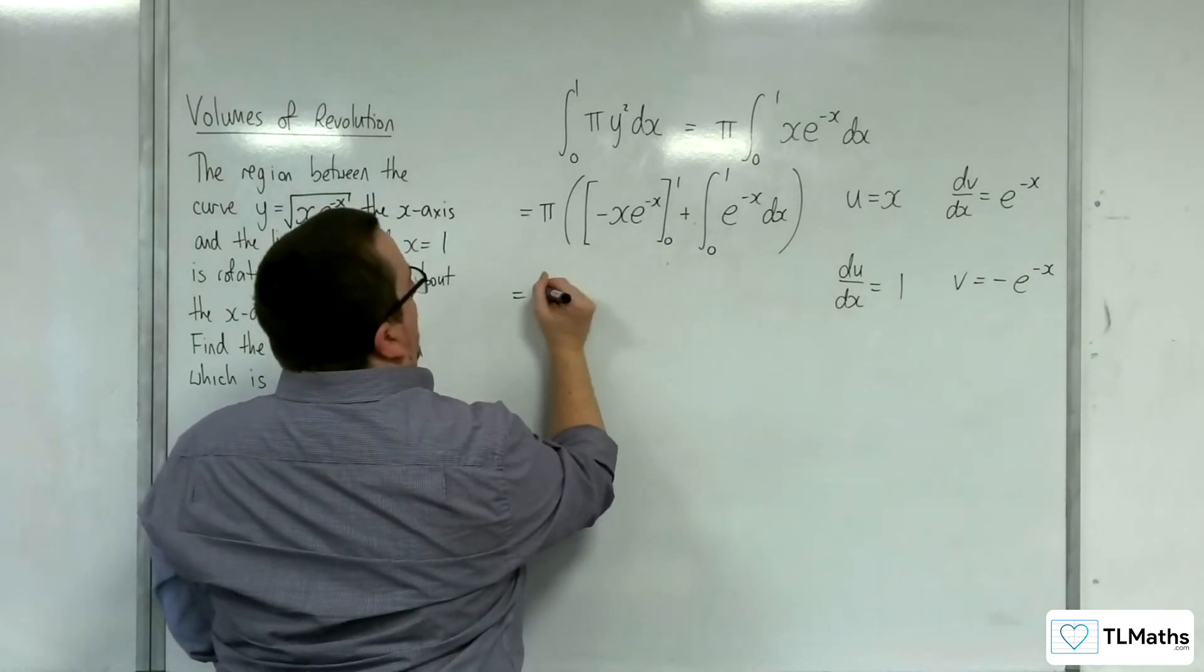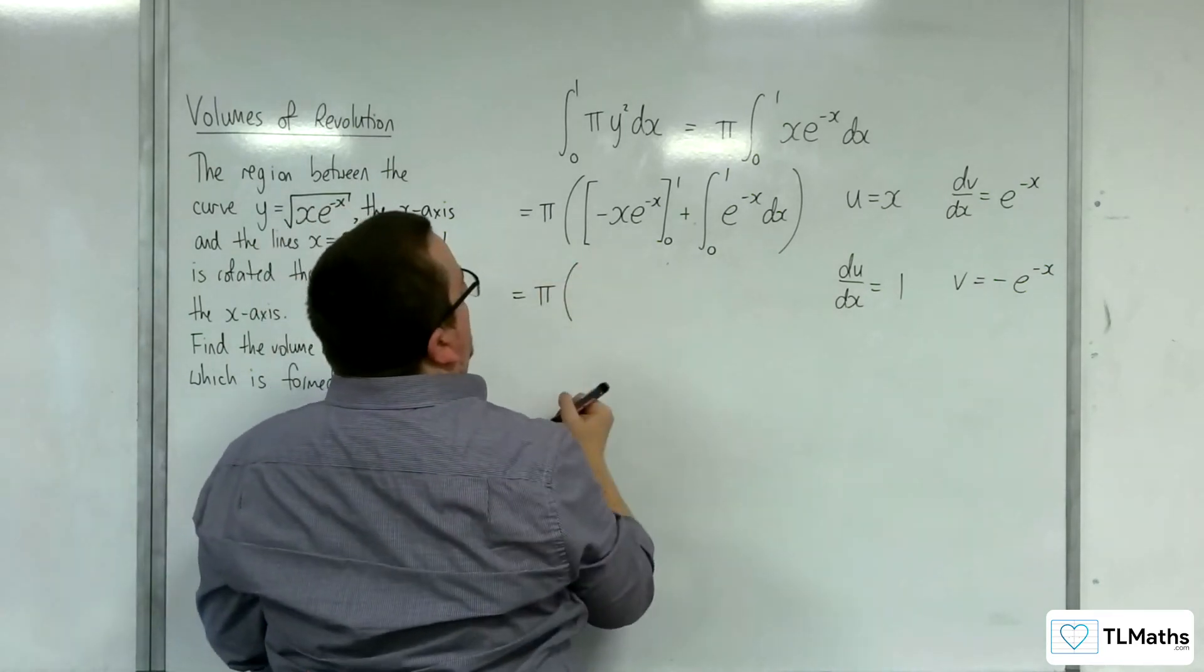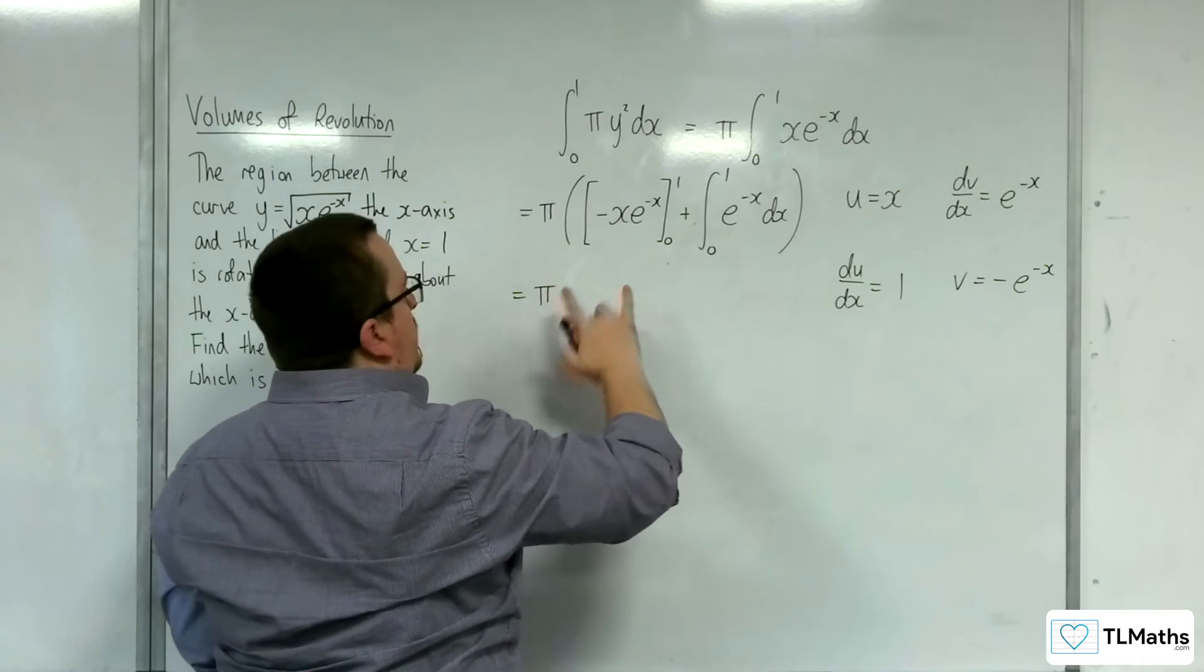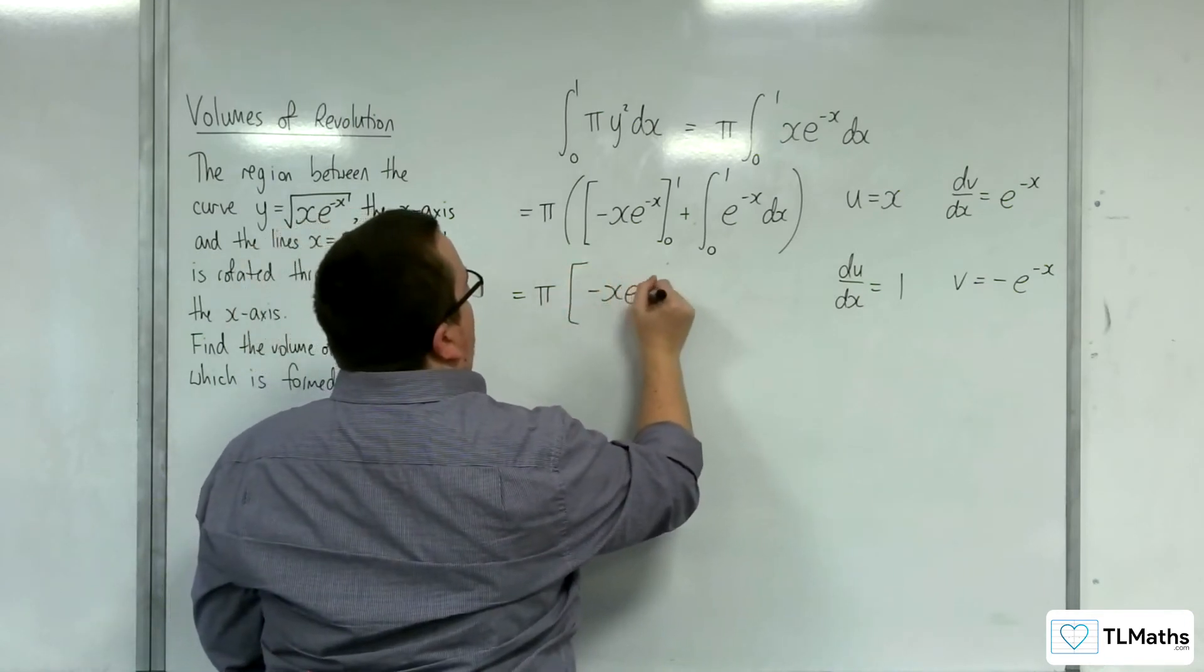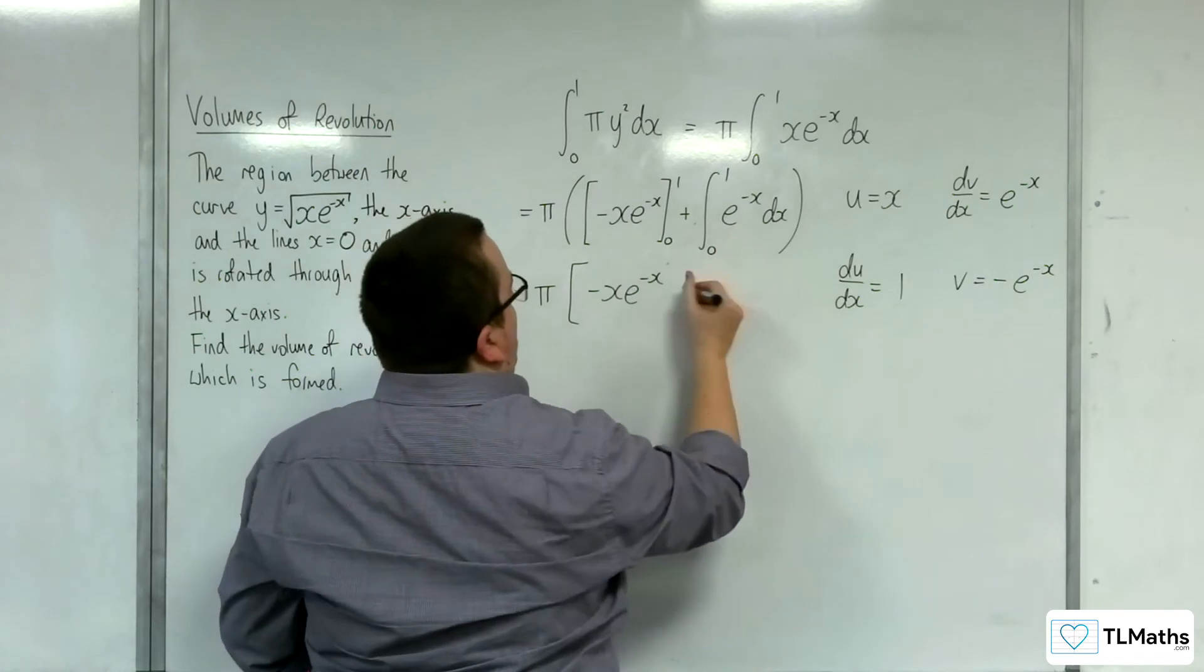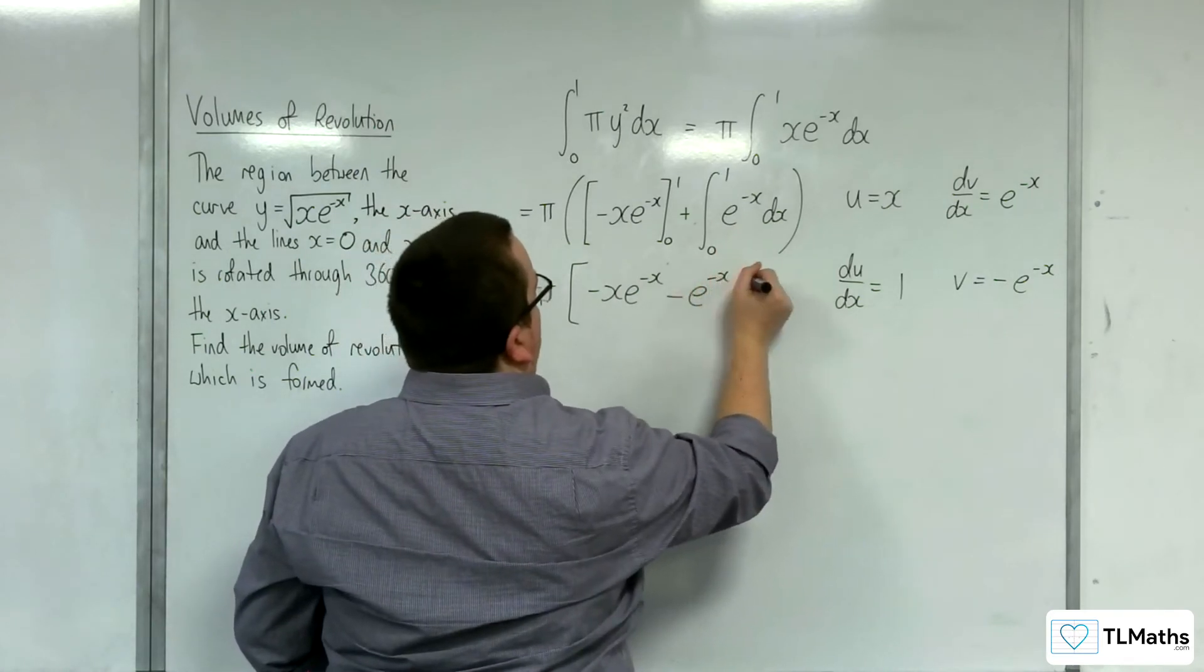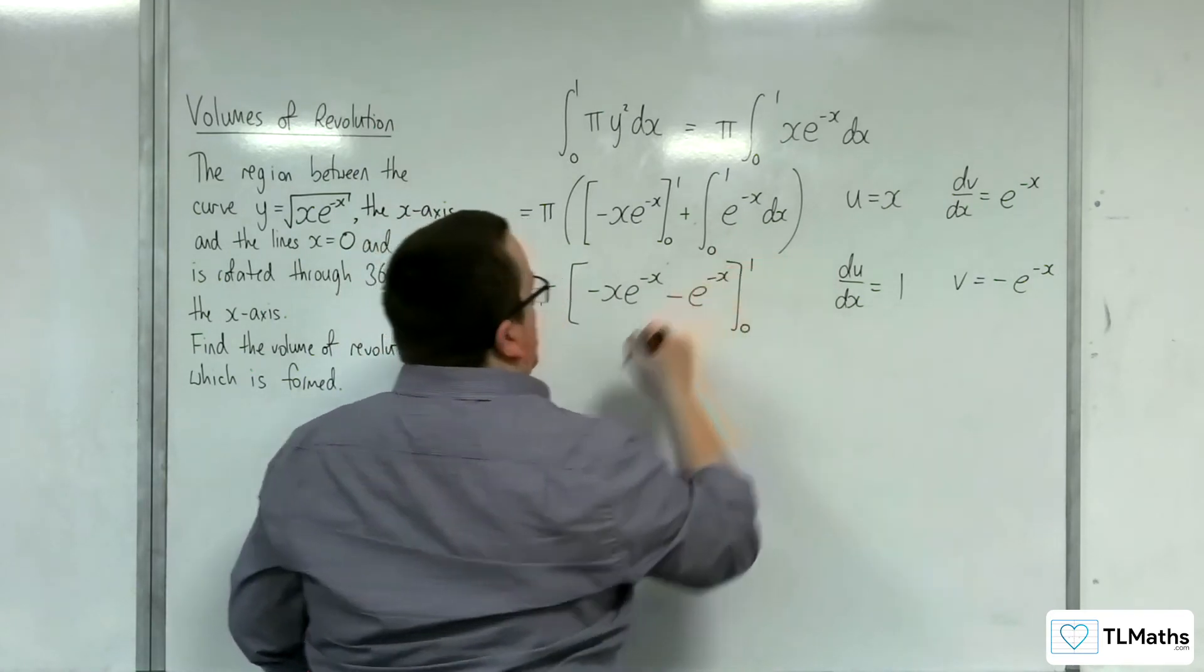So then we've got pi times, well I'm going to put this straight into one big square bracket. So we've got minus x e to the minus x, and integrating that we get take away e to the minus x, and that's all evaluated between 0 and 1.